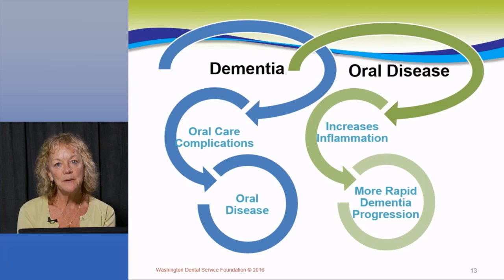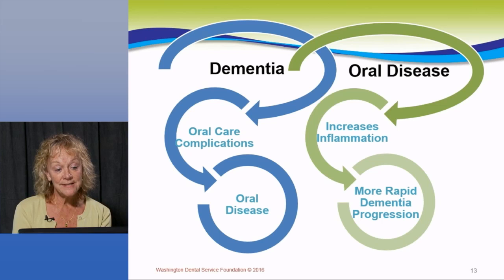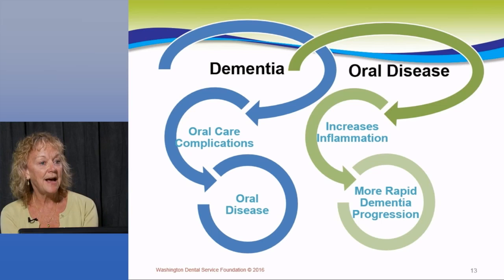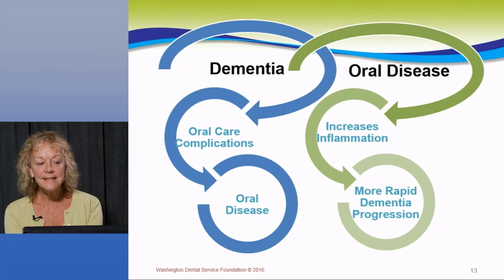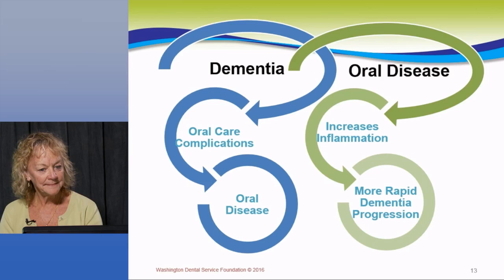Emerging research is showing that the inflammation caused by periodontal disease impacts not only body systems but possibly the brain as well. We're drawing correlations between people who have dementia, Alzheimer's, and oral disease. Oral disease can impact the onset and progression of dementia, and dementia patients can be at high risk for oral disease — it goes both ways. Patients with tooth loss or early periodontitis are at greater risk for developing dementia.